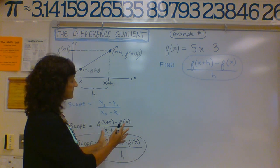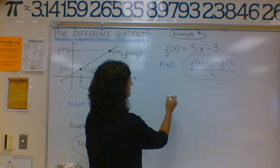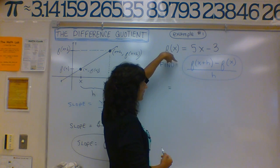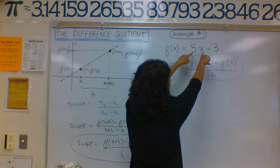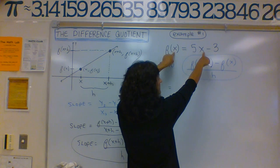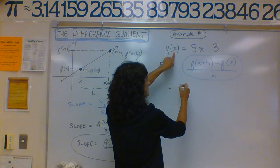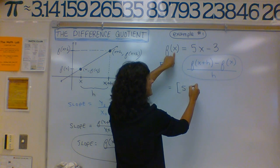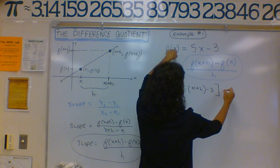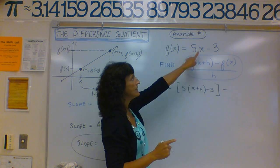So let's go ahead and take our difference quotient and apply it to this example. We want to compute the difference quotient for the function f of x equals 5x minus 3. The first thing we want to do is write f of x plus h — that means we take the x in the function and replace it with x plus h. So you have 5 times (x plus h) minus 3.